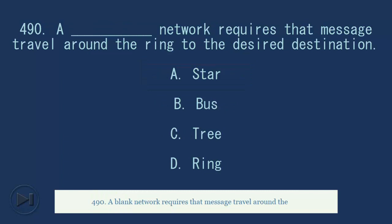490. A blank network requires that message travel around the ring to the desired destination. A. Star. B. Bus. C. Tree. D. Ring. Answer, D. Ring.